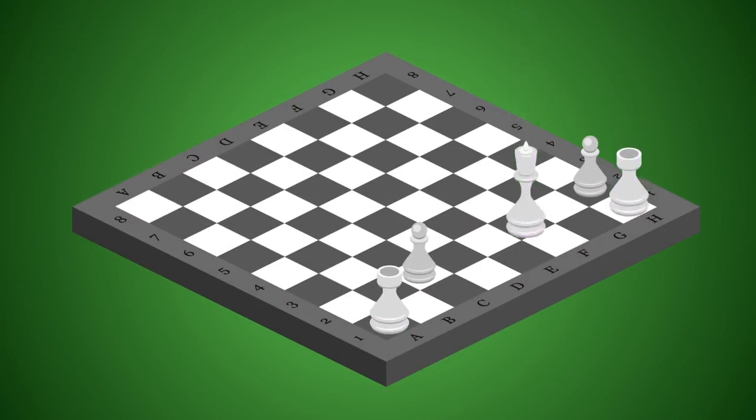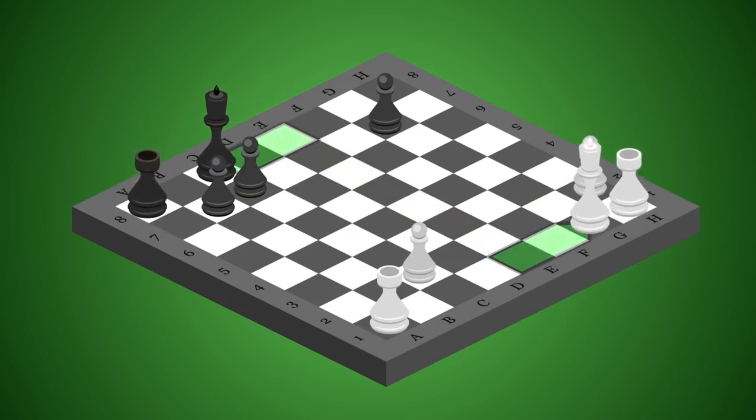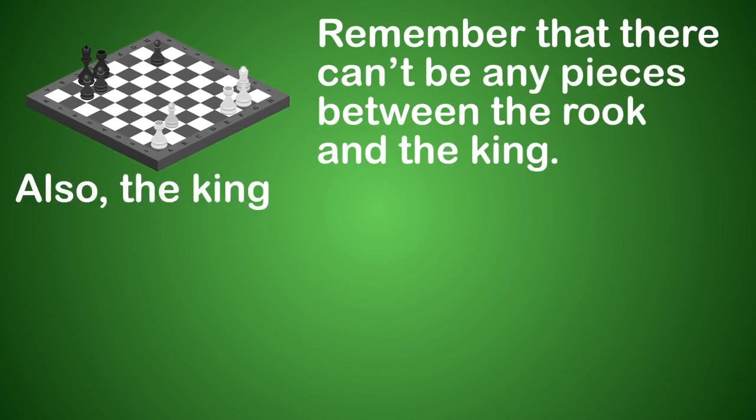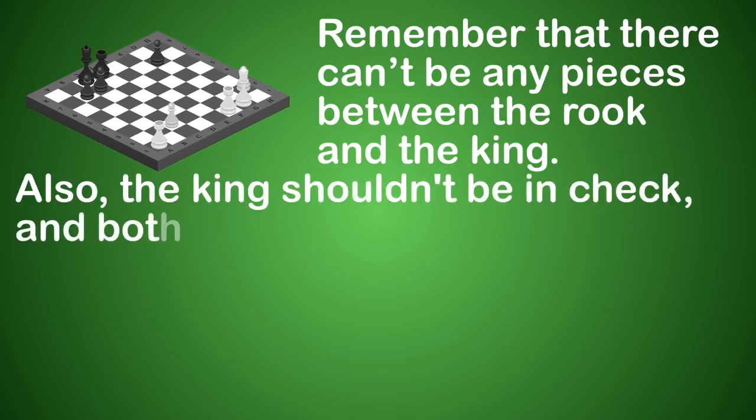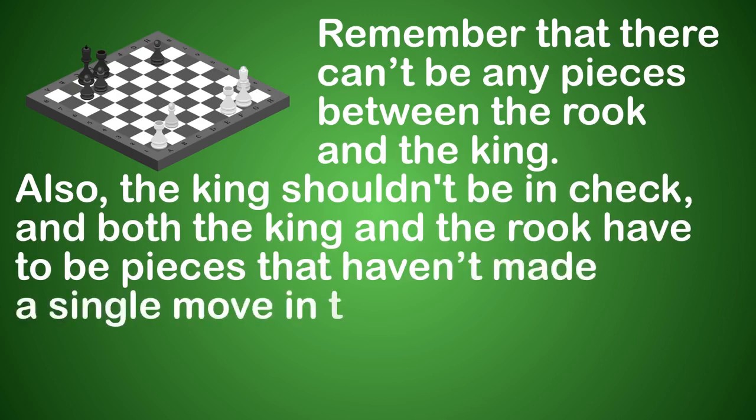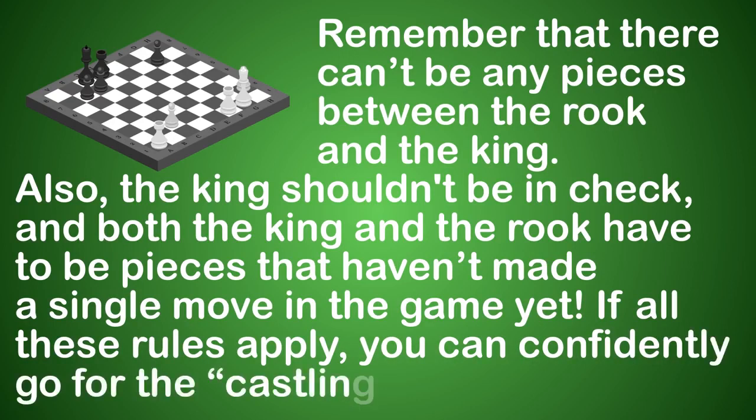Finally, there's a very useful castling move to protect the king. It's used to get the king out of the middle of its rank where he's exposed to the most danger. To make the castling move, move your king two squares toward any rook and then hop that rook over the king so it lands on the square next to the king. Remember that there can't be any pieces between the rook and the king. Also, the king shouldn't be in check, and both the king and rook have to be pieces that haven't made a single move in the game yet. If all these rules apply, you can confidently go for the castling move.